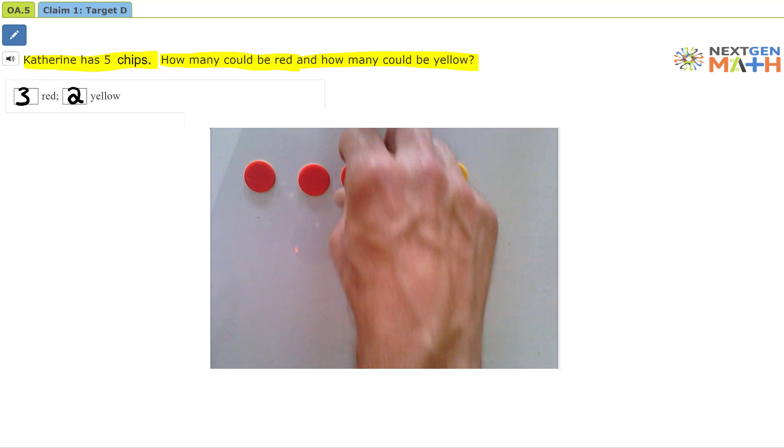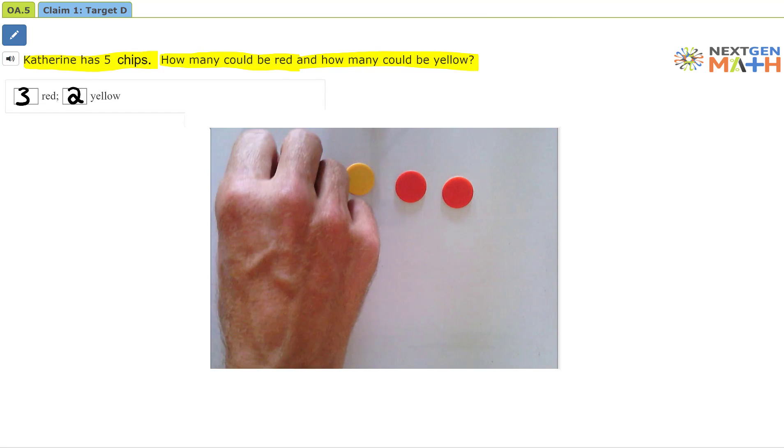Now it's your turn to figure out how many chips could be red and how many could be yellow if you have a total of five chips.